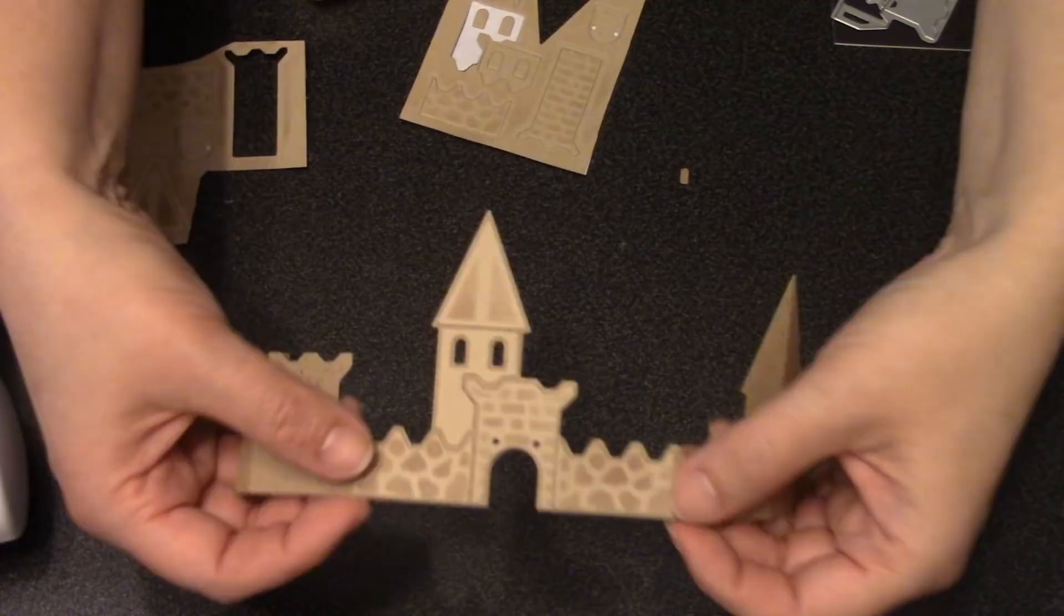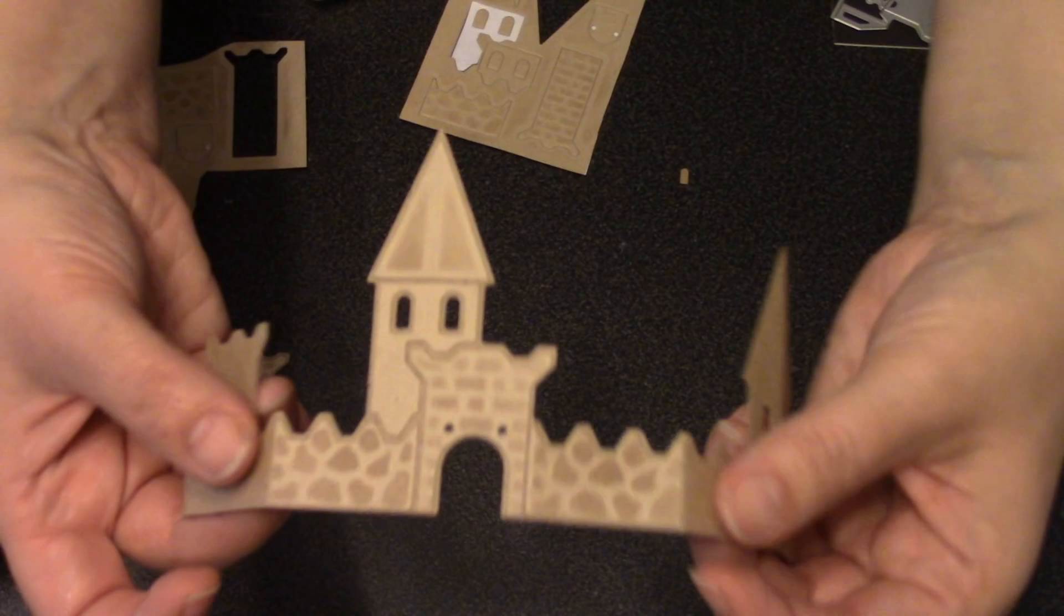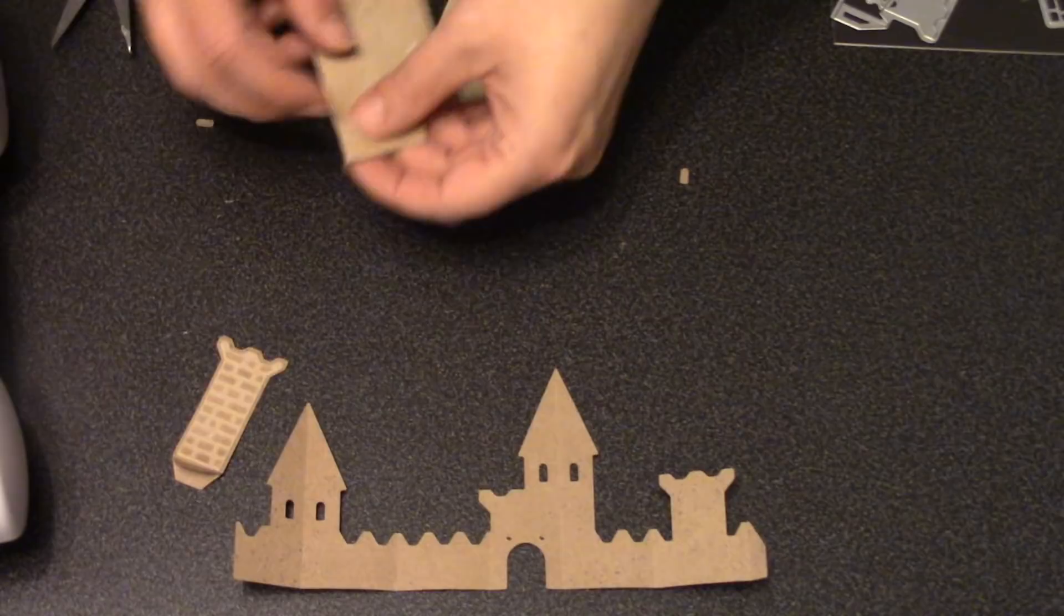Since all of those pieces are stickers, I'll just add them to the castle. The middle three panels get decorated on the front of the castle, and then the other three panels get decorated on the back.